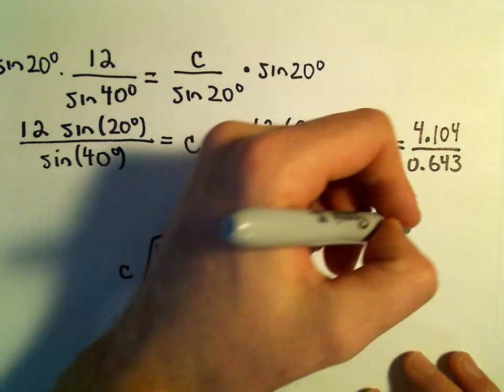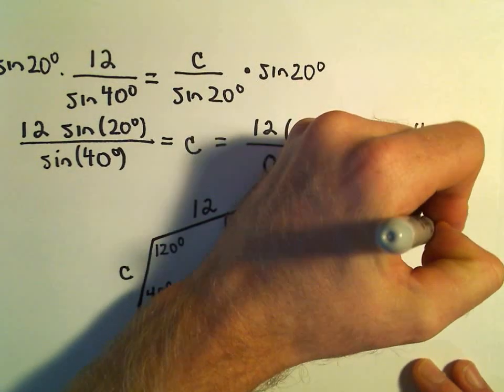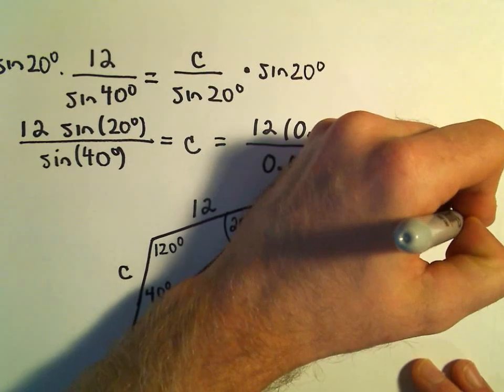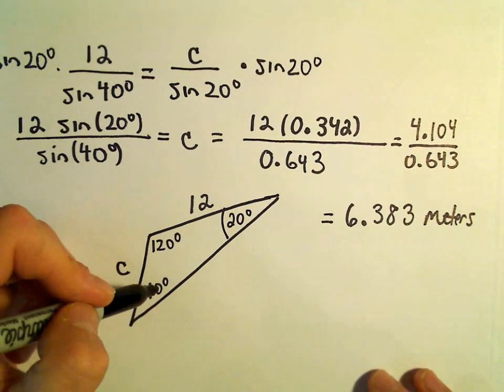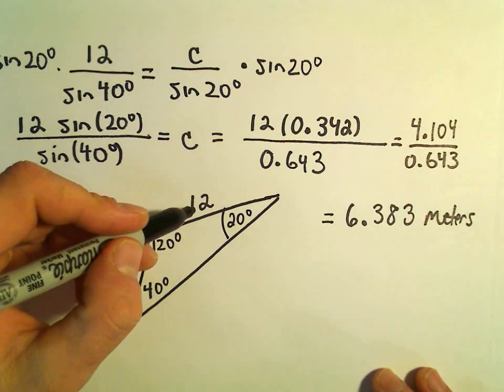So a little bit over 6 meters is what we're getting. And that certainly seems reasonable. If the side opposite 40 degrees is 12,